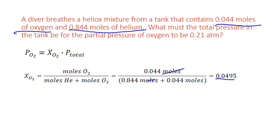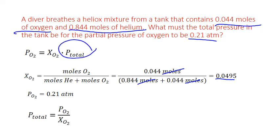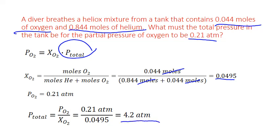Notice that the units of moles cancel out, and mole fraction is considered unitless. We're also given that the desired partial pressure of oxygen is 0.21 atmospheres. Solving for total pressure by dividing both sides by the mole fraction of oxygen, the total pressure equals the partial pressure divided by the mole fraction: 0.21 atmospheres divided by 0.0495 gives us 4.2 atmospheres for the total pressure inside the scuba diving tank.